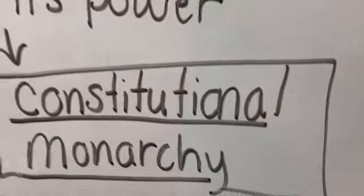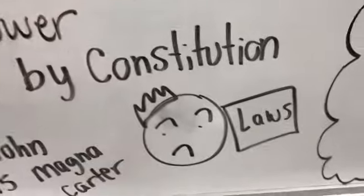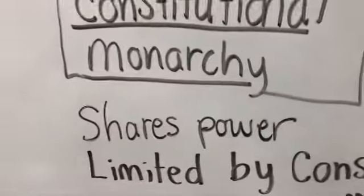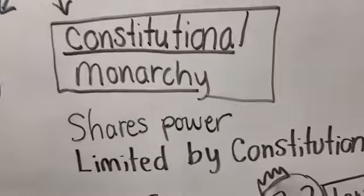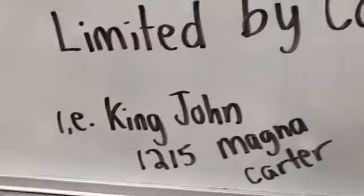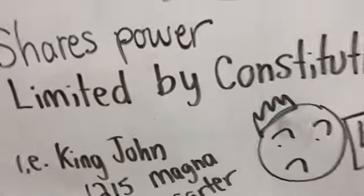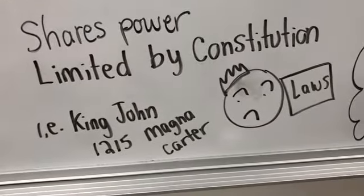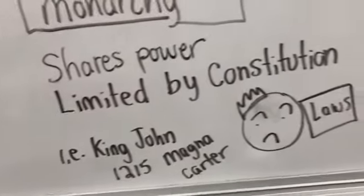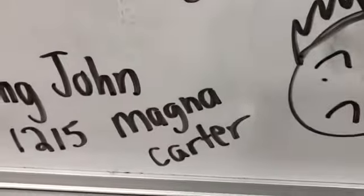The second type of monarchy is called a constitutional monarchy. This is when you still have a king, but the king has to share power and is limited by the constitution. For example, King John, in the year 1215, was told that he would have to give up some of his power to the nobles in order to stay king. And so he had to sign a document called the Magna Carta, which gave people more power. And that is the difference between a democracy and a monarchy.